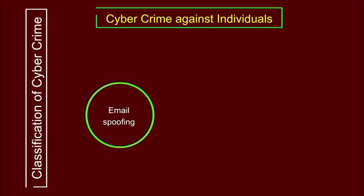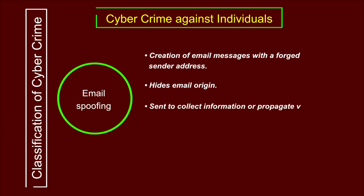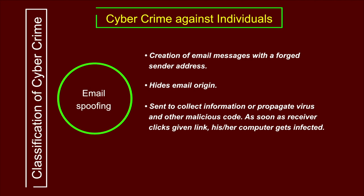The next subcategory is email spoofing, which refers to the creation of email messages with a forged sender address — the sender address will always be wrong. It hides the email's origin, and forged emails are sent to collect information or propagate viruses and malicious code. As soon as the receiver clicks a link in the email, the computer is compromised and infected. Many sites help create and send fake emails easily. You can detect spoofed mail by checking the email header to verify its authenticity.